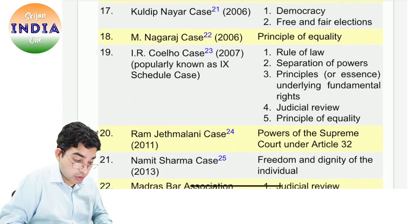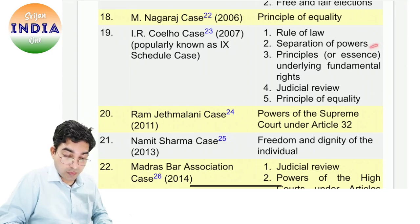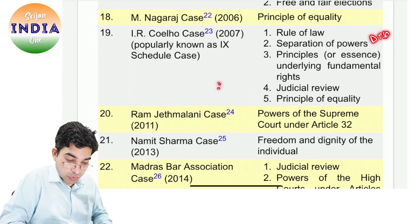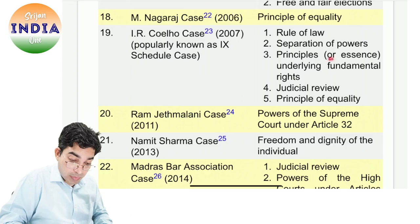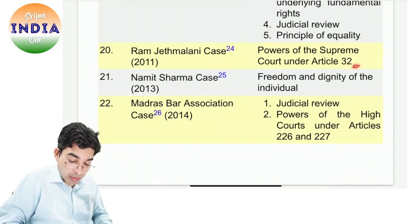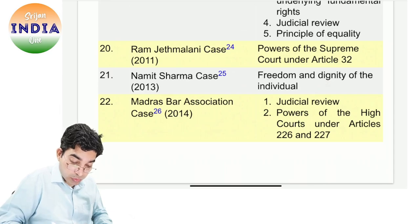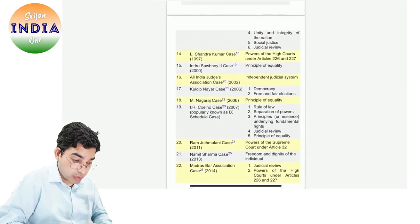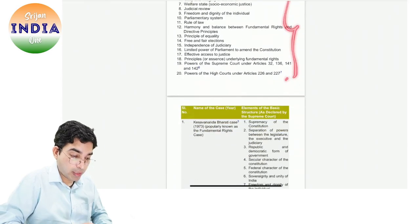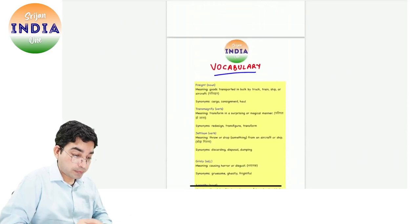Kuldeep Nayar case — democracy, free and fair election. Nagaraj case — equality. Kohelo case — jisko apan 9th Schedule case bhi bolte hain — IR Kohelo case mein rule of law hona chahiye, separation of power hona chahiye. Separation of power kis DPSP mein likha hai? Principles and essence underlying fundamental rights, judicial review, principle of equality. Ram Jethmalani case — Article 32, jisko heart of constitution Baba Sahib ne bola tha. Namit Sharma case — dignity of individual. Madras Bar Association — judicial review, Articles 226 and 227 ki powers. Ye jo 15-20 yahan pe dikh rahe hain — iska consolidated form hai — ye cheez humne different different cases se dekha — this is our basic structure of the constitution.